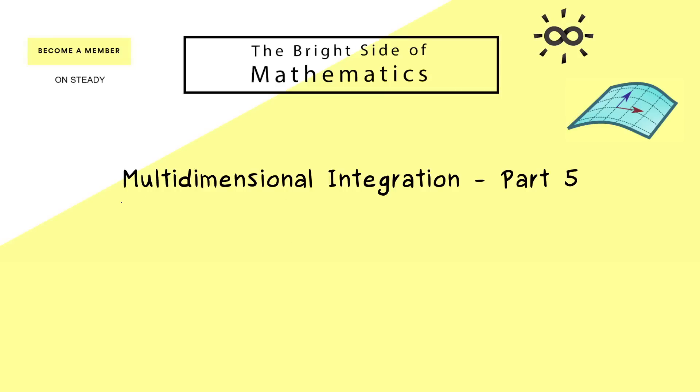Hello and welcome back to multidimensional integration, the video series where we learn how to solve integrals in R^n. In today's part 5, we will talk about the substitution rule in higher dimensions, usually known as the change of variables formula because one can see this calculation as changing the coordinate system. In the end, it's not a complicated formula but very useful in applications.